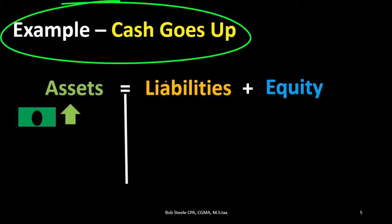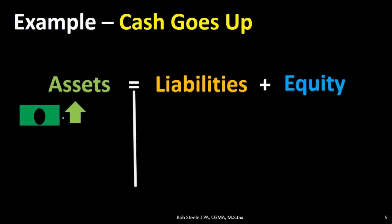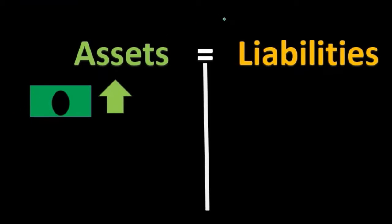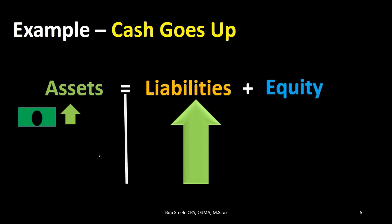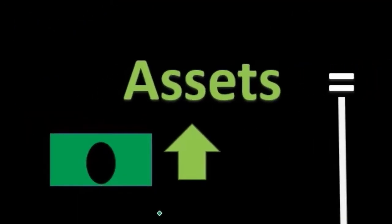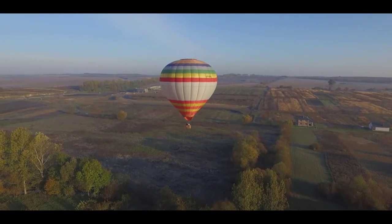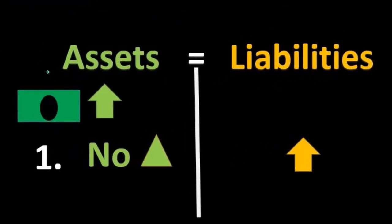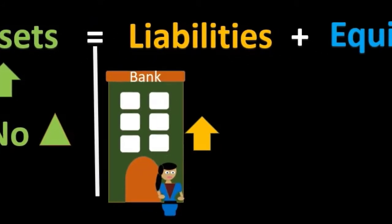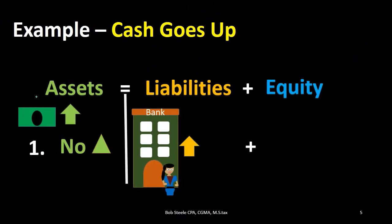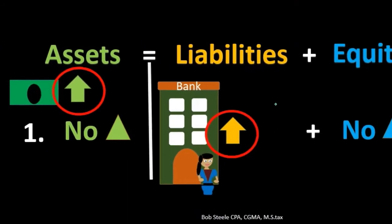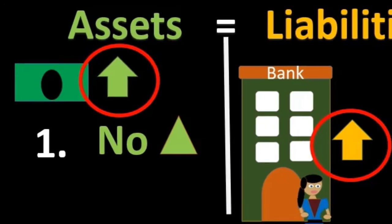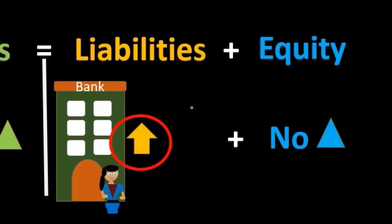Looking at examples related to cash: if cash goes up, what else could happen? One scenario is that liabilities go up due to a bank loan. Cash would increase and the liability would increase, with equity remaining the same. We remain balanced in this case — assets going up, and the amount owed to the bank for money received would be due in the future. That is one type of transaction that could happen.